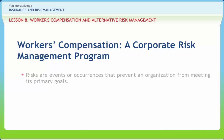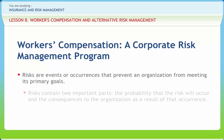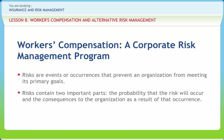Risk are events or occurrences that prevent an organization from meeting its primary goals. Risks contain two important parts: the probability that the risk will occur and the consequences to the organization as a result of that occurrence. Risk Management involves the determination of these probabilities, the consequences of potential risk, and the identification of actions that can be taken to limit the possibilities and the degree of the consequences.